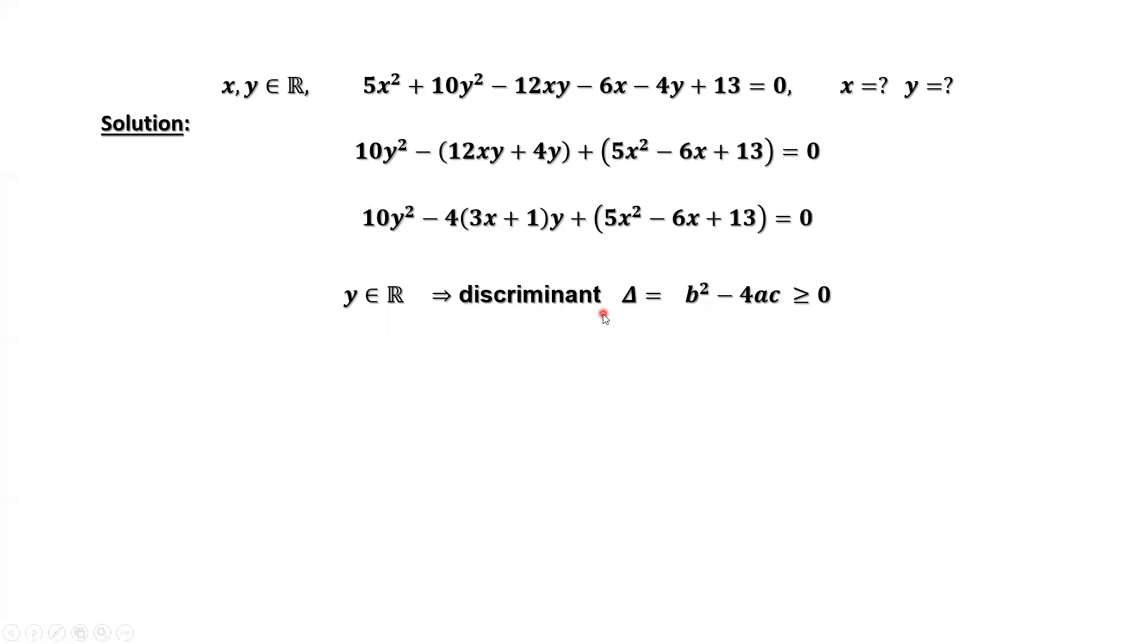The discriminant is the inside part of the square root of the quadratic formula. We already mentioned that this is a, this is b, this is c. We plug in those numbers into delta.